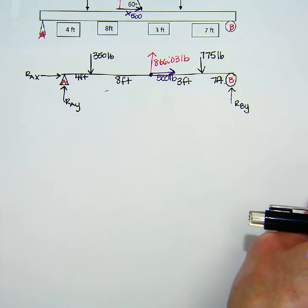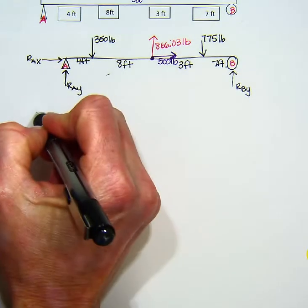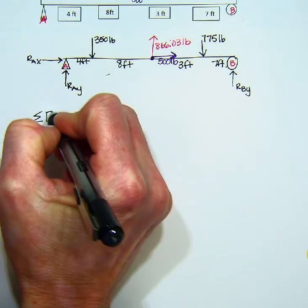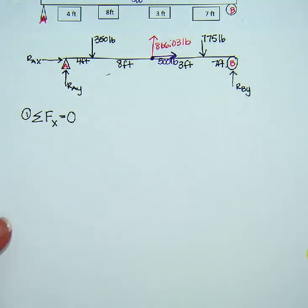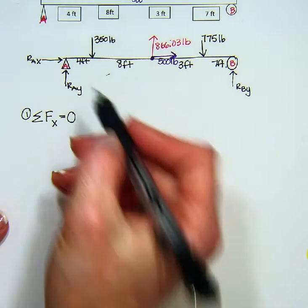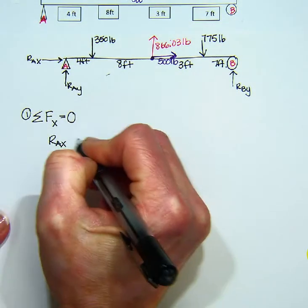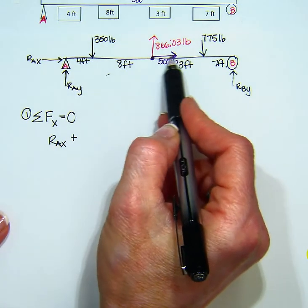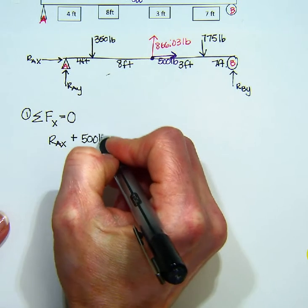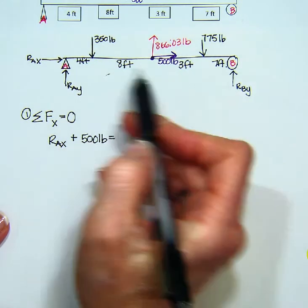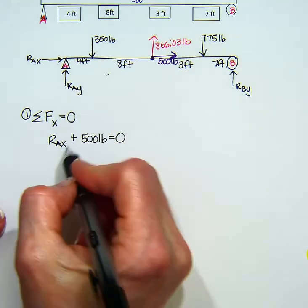So now that we have our free body diagram, we're ready to follow our three step process. So step number one is the sum of the forces in the x direction have to be zero. So when I look at this, Rax is acting in the x direction, left and right. And now I have this 500 pounds acting in the x direction. And that's all left and right, so that has to equal zero. So then if I solve for Rax.